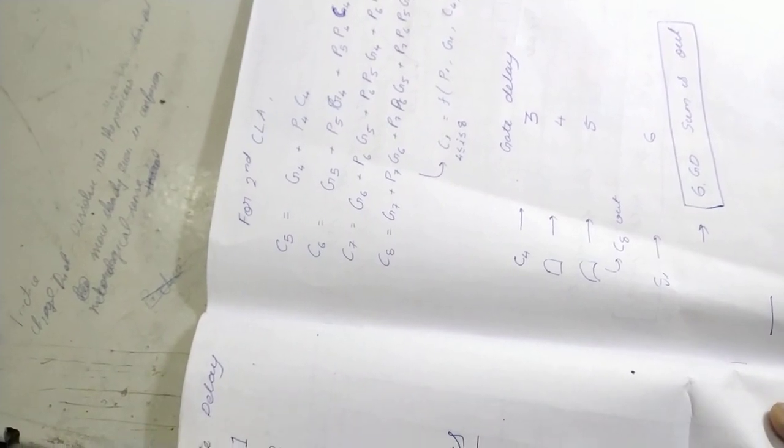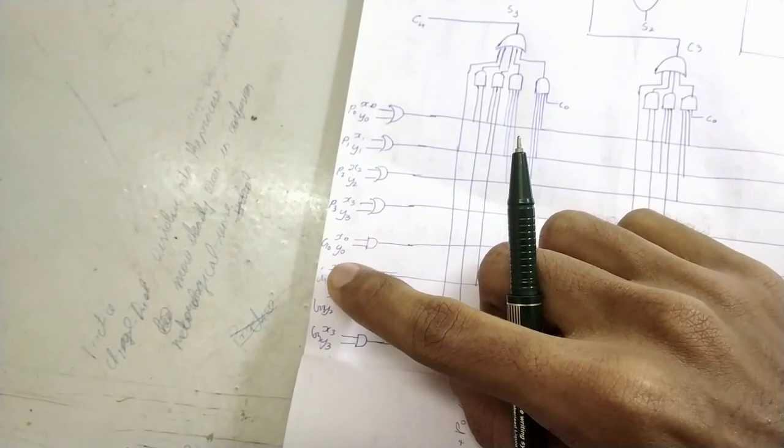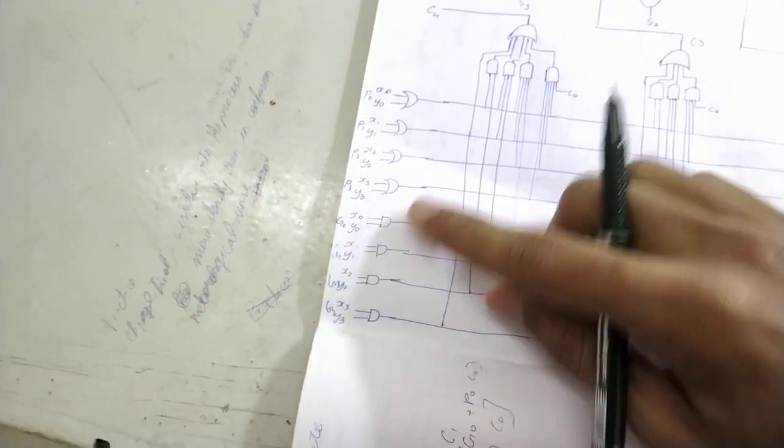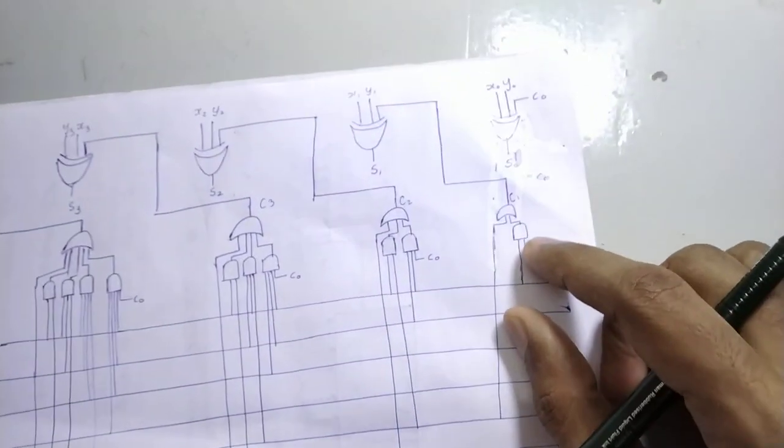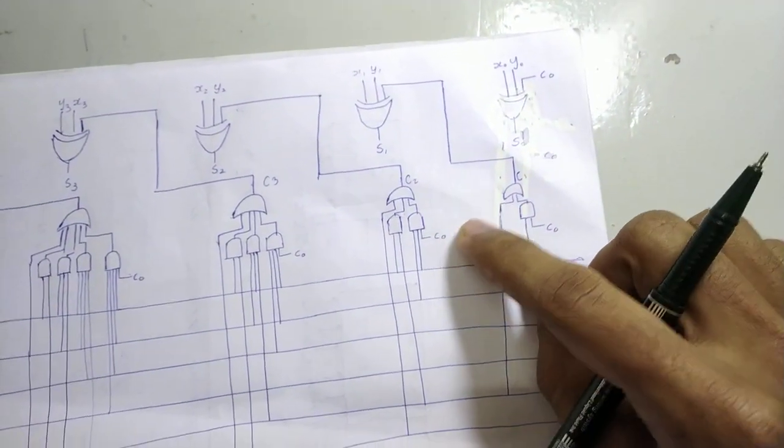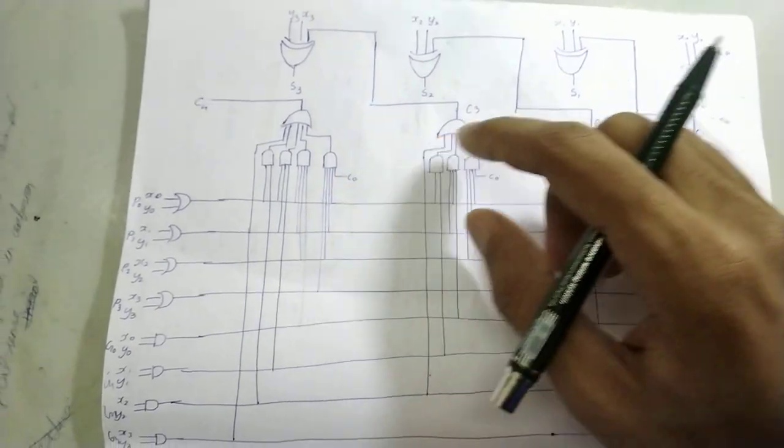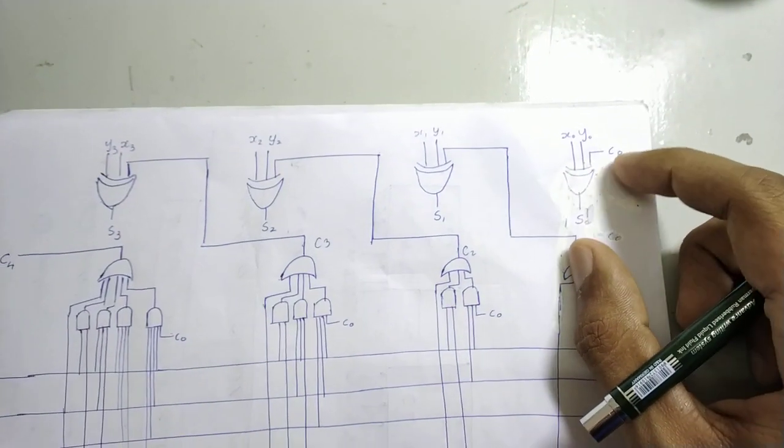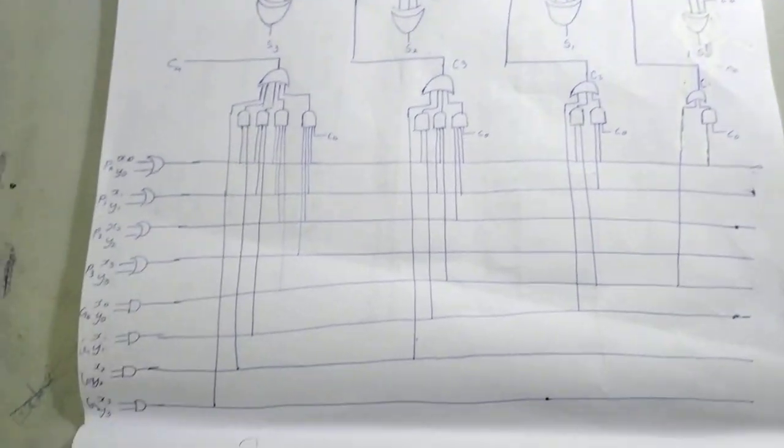And the Gs will also be G4, G5, G6 and G7. That's the only difference. And instead of C0, wherever C0 is there, it will be C4. Wherever, here also, wherever C0 is there, it will be C4.